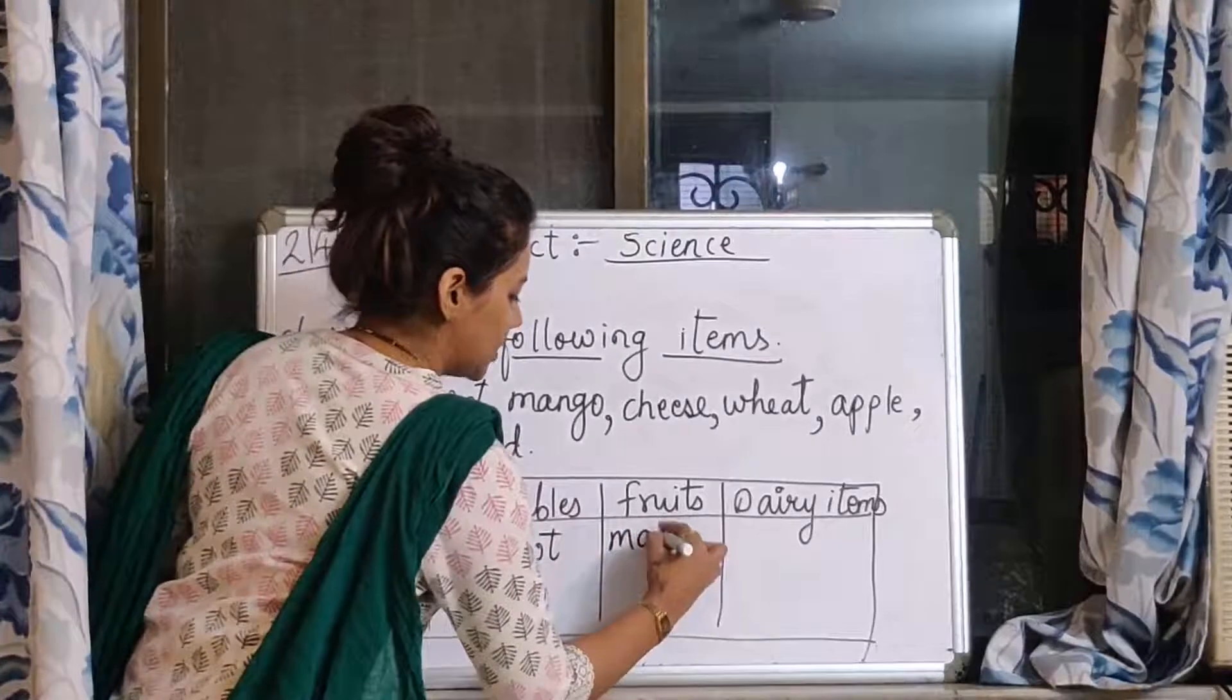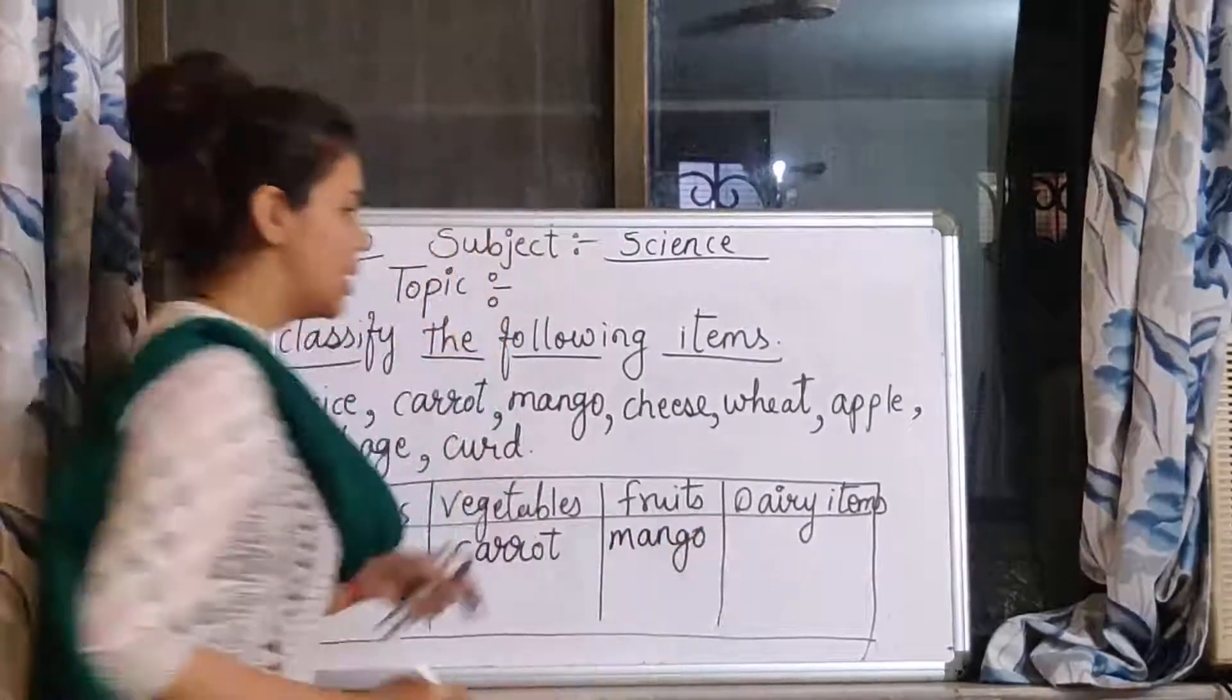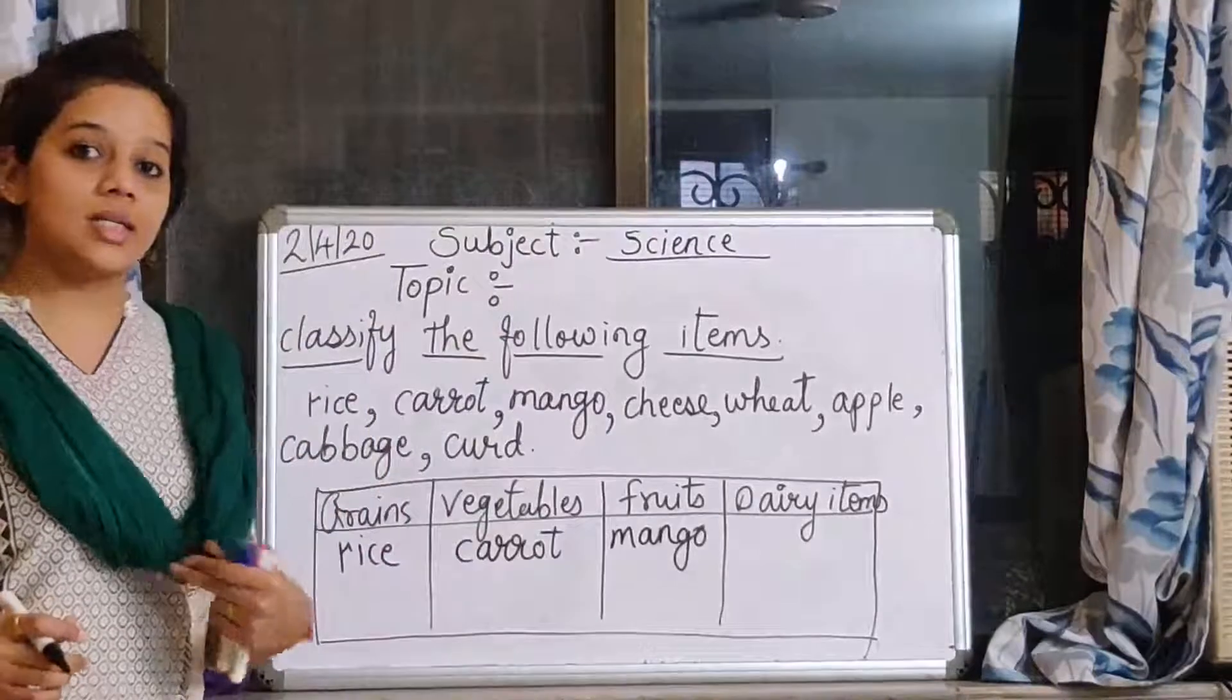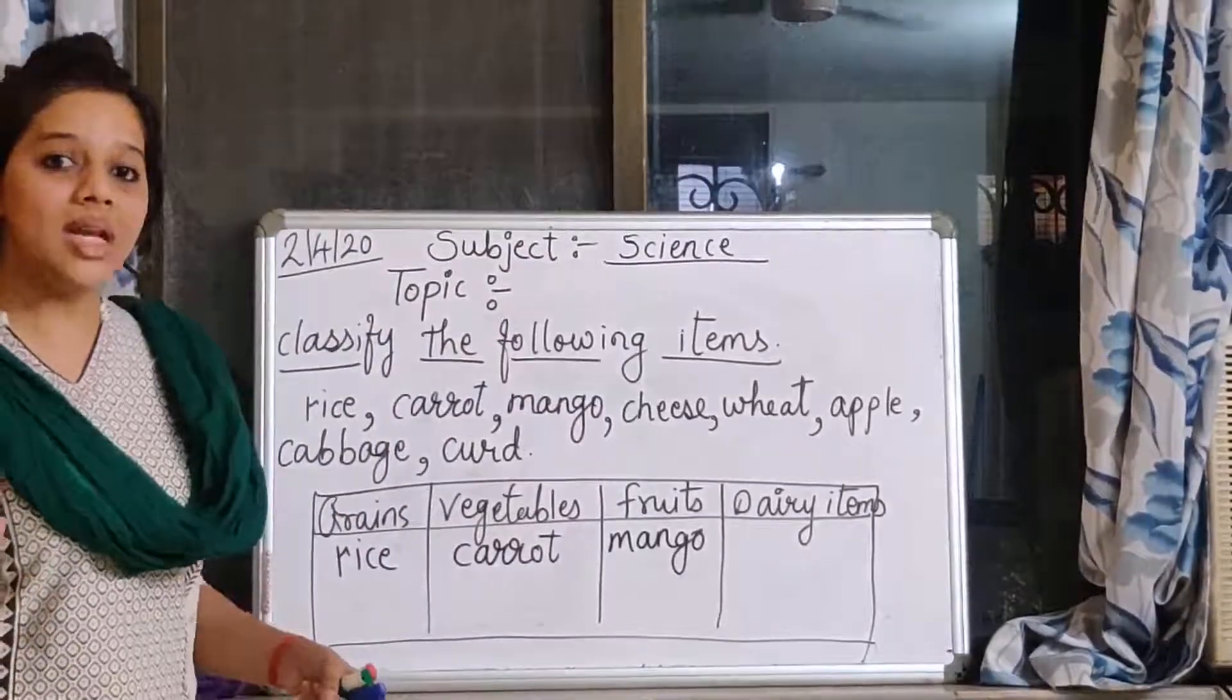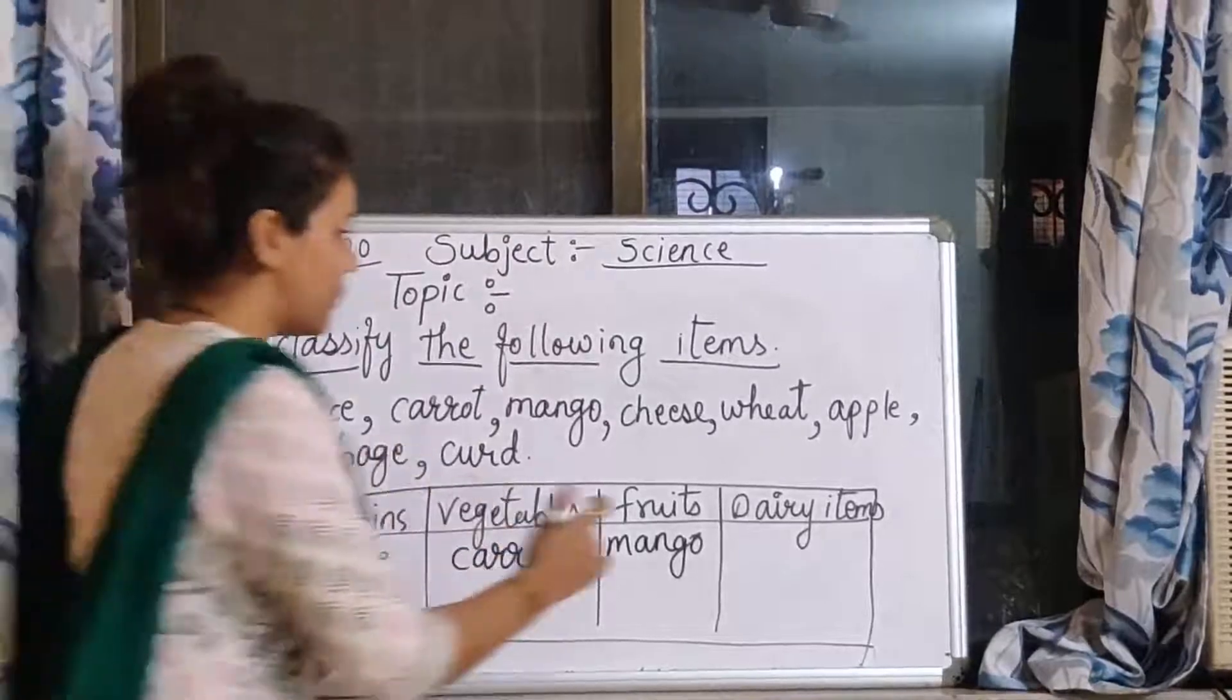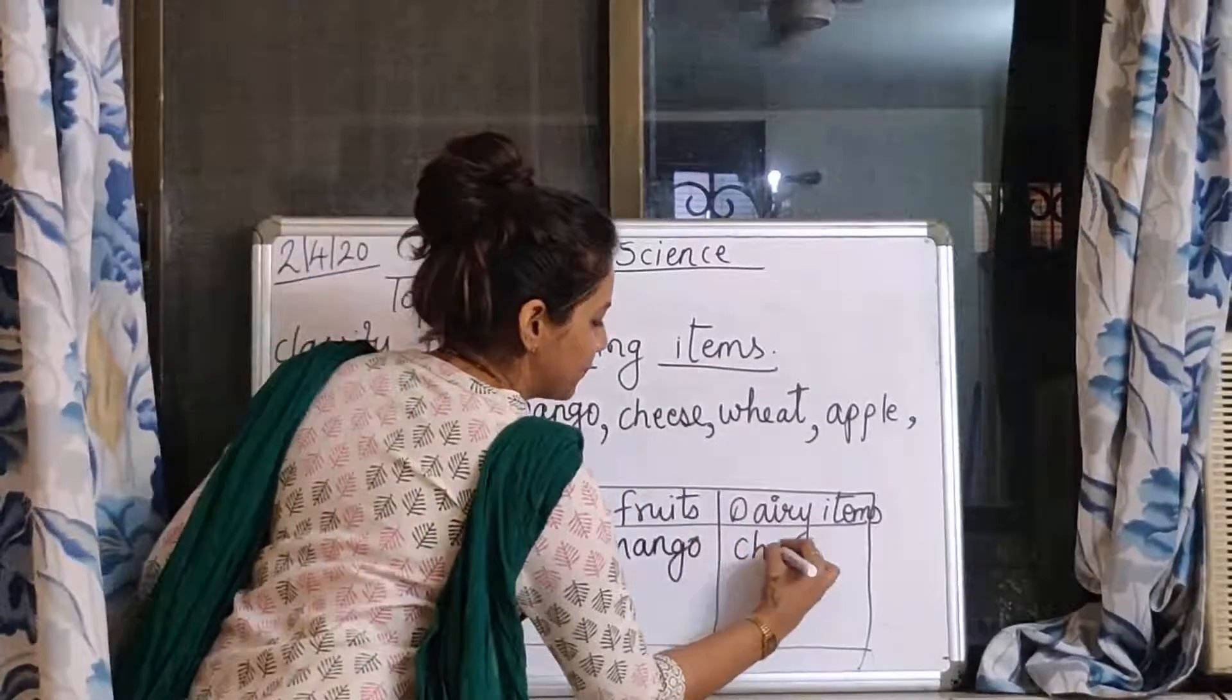And cheese. Cheese will come in dairy products. It is made up from milk. Right? So cheese is dairy products. So cheese will come here.